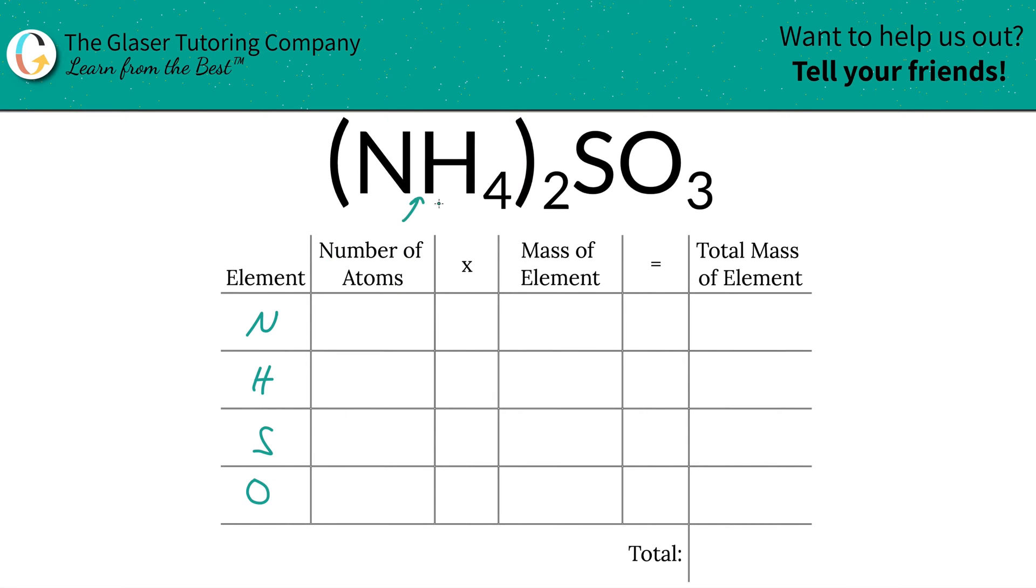Then we're going to identify the number of atoms of each, and that's where the subscripts come into play. Now if you don't see a subscript at the bottom of the element, just simply put a one there because that's what it is assumed to be. Now to find the total number of nitrogen, it's going to be one here multiplied by the outer subscript.